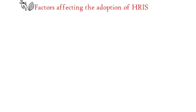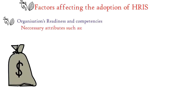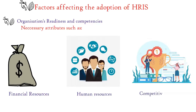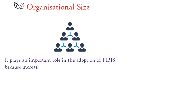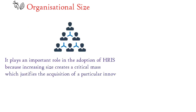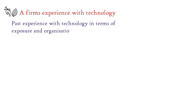There are numerous components that affect the adoption of HRIS. Among these are an organization's readiness and competency. Organizational readiness is used to determine whether the organization has the necessary attributes such as financial resources, human resources, and the competitive attitude to adopt HRIS. Organizational size also plays an important role, because increasing size creates a critical mass which justifies the acquisition of a particular innovation. A firm's past experience with technology ultimately affects its future choice in the adoption of technology.